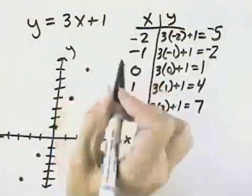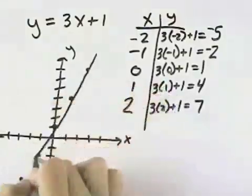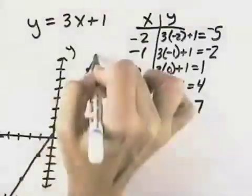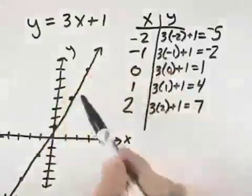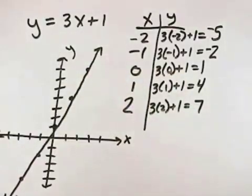And then we try to draw a straight line through these points. And that straight line, that's a little crooked, draw it as straight as you can, and that would be the line that represents the graph of this equation.